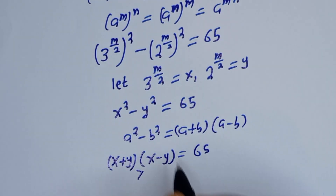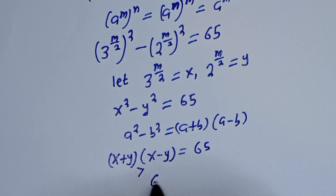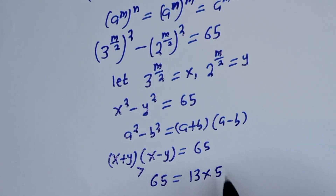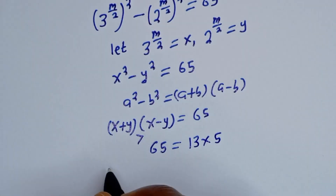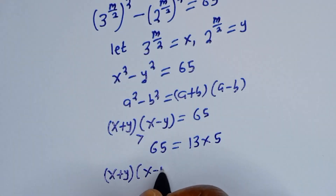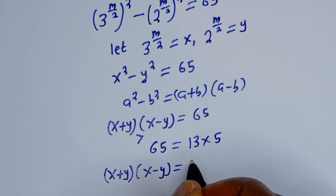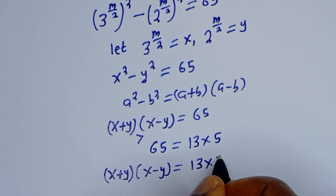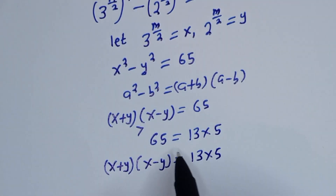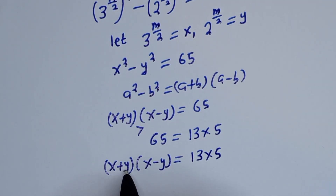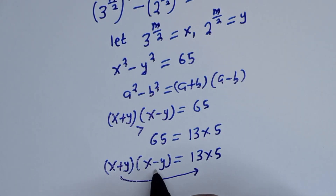Now x plus y is greater than x minus y. Then 65 is equal to 13 multiplied by 5. So (x plus y)(x minus y) equals 13 multiplied by 5. Therefore x plus y will be equal to 13 and x minus y will be equal to 5.